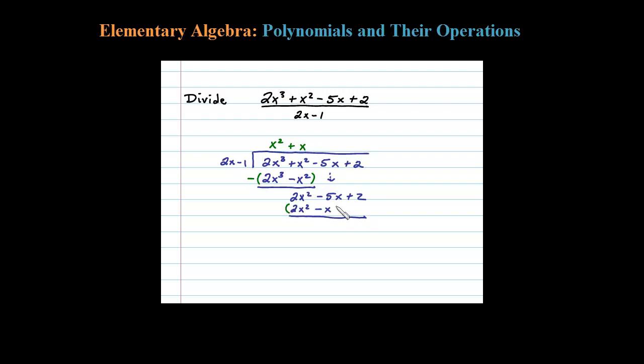When I subtract these terms, 2x squared minus 2x squared is 0—that's what you want. And again, distributing the negative, that's really plus. So negative 5x plus x is negative 4x. Bring down the next term.